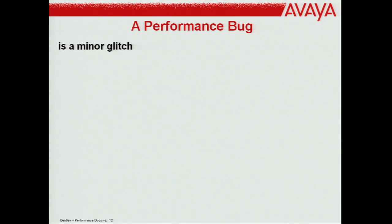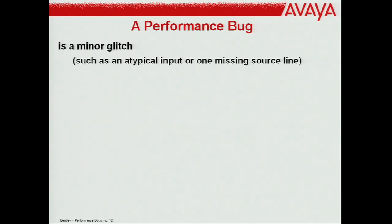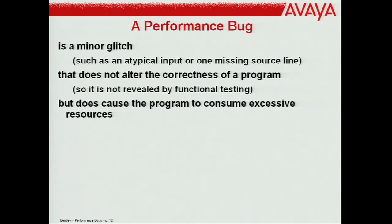A performance bug is a minor glitch — it's an atypical input, one missing line, a thinko. It doesn't alter the correctness of the program. These programs would pass all correctness tests. It's not revealed by testing, but it does cause the program to consume excessive resources — CPU time, page faults, whatever. That's what I mean by performance bugs.